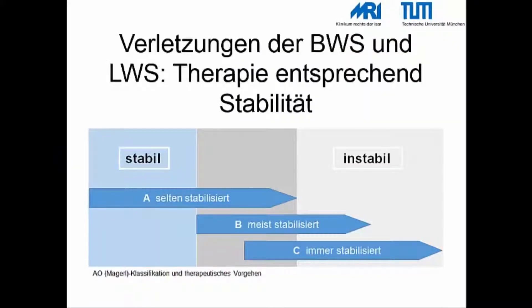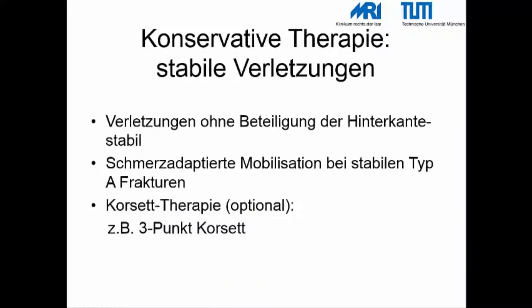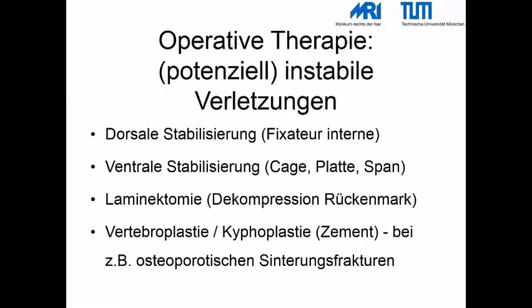Für die optimale Therapie ist es wichtig, die Stabilität der Verletzung zu beurteilen. Nach der Einteilung von Magerl sind Typ A-Frakturen eher stabil, während B- und C-Frakturen eher instabil sind. Stabile Verletzungen können konservativ behandelt werden – z.B. schmerzadaptierte Mobilisation, optional ein Korsett. Potenziell instabile Verletzungen sollten operativ stabilisiert werden. Für die dorsale Stabilisierung steht der Fixateur interne zur Verfügung. Bei zusätzlicher ventraler Instabilität kann diese mittels Platte, Cage oder Span versorgt werden. Bei Rückenmarkskompression sollte zusätzlich eine Laminektomie erfolgen.